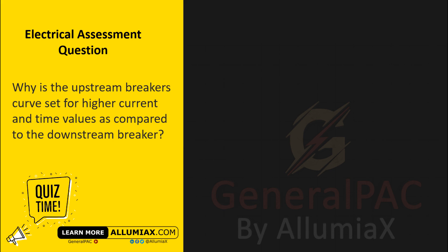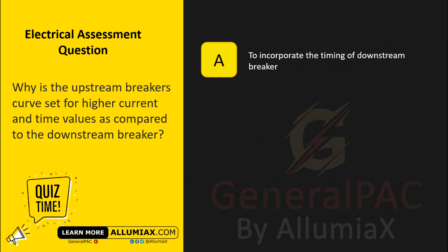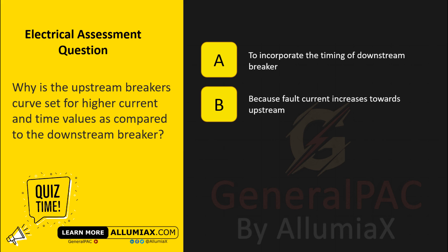Why is the upstream breaker curve set for higher current and time values compared to the downstream breaker? A. To incorporate the timing of the downstream breaker. B. Because fault current increases towards upstream.